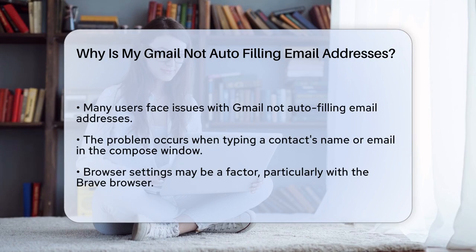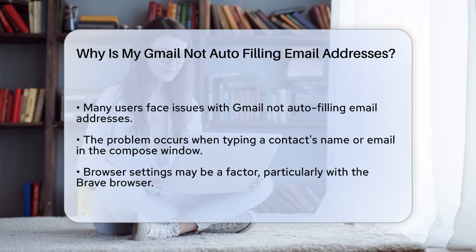First, let's go through the steps you're taking. You open Gmail, hit the compose button, and start typing the name or email address of a contact. But instead of Gmail suggesting the full email address, you're left typing it all out manually.